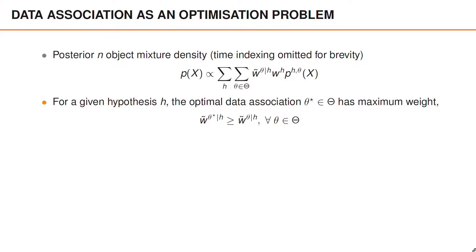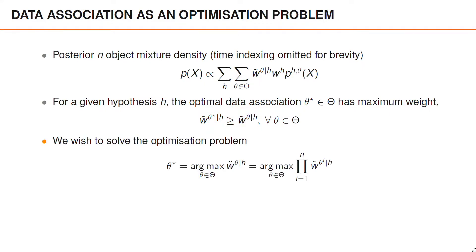For a given hypothesis, the optimal data association theta star is the one that has maximum weight, so the weight of theta star is larger than or equal to the weight of any valid association. The optimization problem that we wish to solve is theta star equal to the valid data association that maximizes the weight of the association, and this weight can be described as a product of the weights for each object.